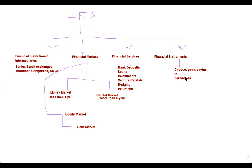Other instruments include shares held in DMAT form electronically. Shares represent part ownership of a company — if I buy a share of Reliance, it means I have invested in part ownership of Reliance. The acknowledgement comes to my DMAT account. Derivatives are essentially hedging instruments — they act as hedging instruments, which we will see in detail in that chapter.